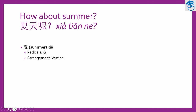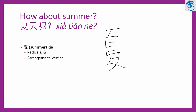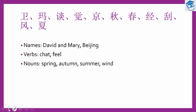Next, David asks again: How about summer? — 夏天呢？ 夏 means summer. This is the pinyin 夏, and the radical is on the bottom. The arrangement is vertical. Let's look at how to write 夏: eleven strokes for this word. To say 夏天呢 is to ask how about summer? — as you have learned, 呢 is used to ask where or how about. This is part of the conversation covered for this lesson.